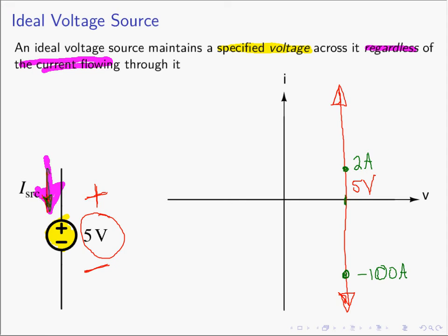An ideal voltage source maintains a specified voltage across it regardless of the current flowing through it. This means for voltage sources, we always know its voltage — in this case, 5 volts — but we know nothing about the current. Because this 5-volt source can have any current flowing through it and still produce its 5 volts, there is no relationship between the voltage of a voltage source and its current. We don't know the current until we look at the rest of the circuit and solve it using KVL, KCL, and Ohm's Law.